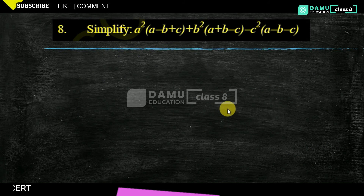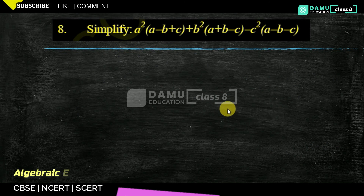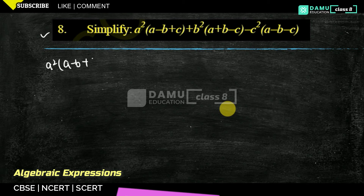Hello viewers, thanks for watching our videos. Please subscribe and hit the bell icon. In this module, we are going to discuss the 8th question: simplify 5 — we need to find a squared into a minus b plus c, plus b squared into a plus b minus c, minus c squared into a minus b minus c.